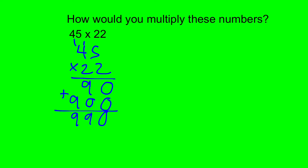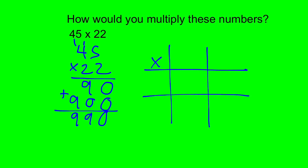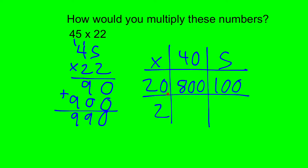Some kids showed me this — I call this the grid method, or columns. You take the 45 and break it up into 40 and 5, you take the 22 and break it up into 20 and 2, and then you multiply each of these numbers: 20 times 40 is 800, 20 times 5 is 100, 2 times 40 is 80, and 2 times 5 is 10. Basically this is the longer version of the algorithm. I personally like this because it takes into account all of the place values. You add up all your products: 800 + 100 + 80 + 10 = 990.